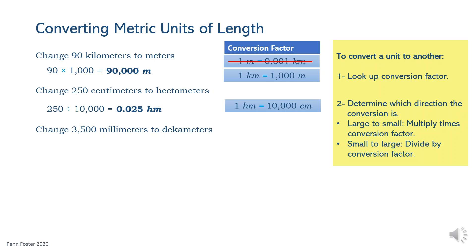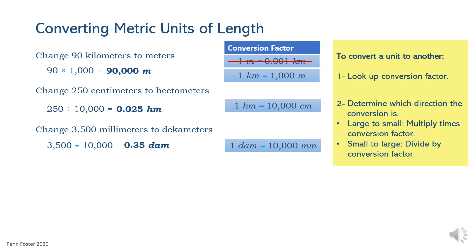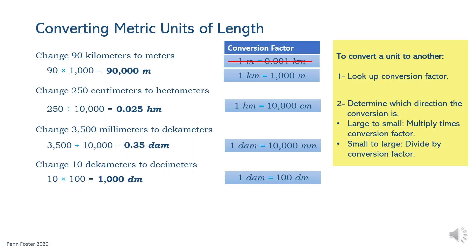The next problem follows the same steps. There are 10,000 millimeters in each decameter. Since the problem asks to change millimeters to decameters, divide 3,500 millimeters by 10,000. The answer is 0.35 decameters. Finally, to change 10 decameters to decimeters, multiply 10 times the conversion factor 100. The answer is 1,000 decimeters.